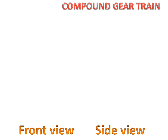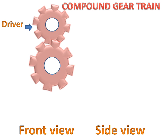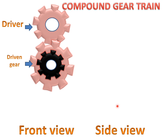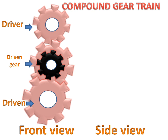Now we will discuss about the compound gear train. We have a driver gear and it is connected to the driven gear. The driven gear is connected to a small gear which is a second driver for this driven gear. In the center of these two gears we have two gears — the bigger one is the driven gear and the smaller one is the driver gear, which will drive this gear.